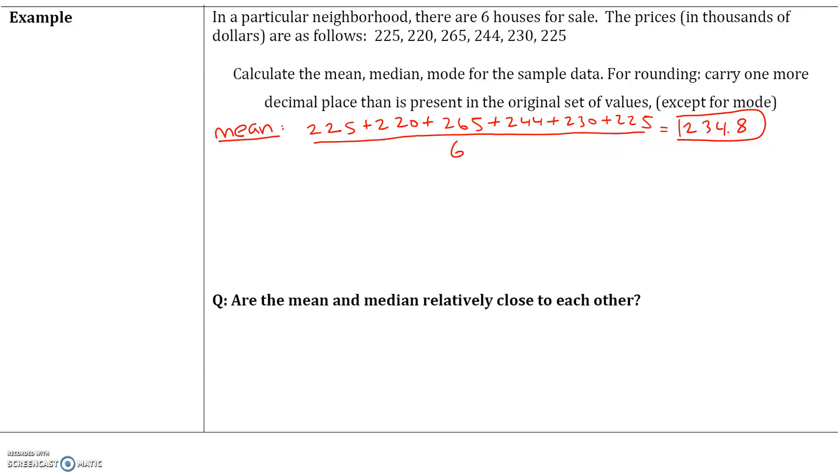For the median, we have to first have a sorted list from smallest to largest value. So let's start with the smallest value, 220, then 225, then another 225, then 230, then 244, and finally 265.